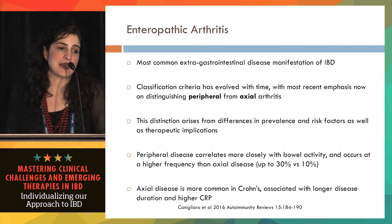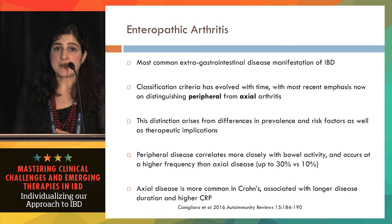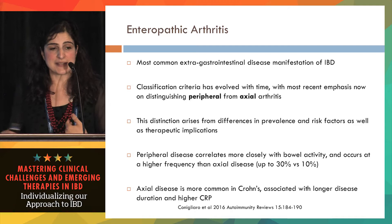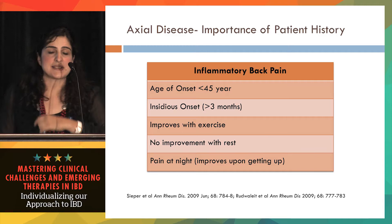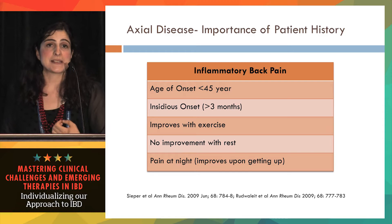Axial disease, which tends to mimic ankylosing spondylitis, is more common in patients with Crohn's disease, tends to be associated with a higher CRP, and a more extensive and longer disease course. We have to approach axial disease very carefully because back pain is very common in the general population and in IBD patients, and not all back pain is spondyloarthropathy.